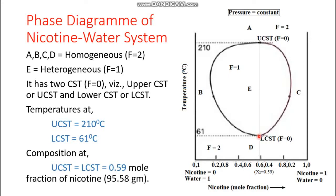There is another point — this is the upper CST and lower CST. Now let's look at the zone that is homogeneous and heterogeneous. This is a confined zone. This homogeneous zone is the unsaturated solution of nicotine in water, also called the unsaturated solution of water in nicotine.